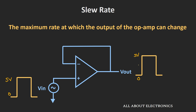Ideally, the output should go from 0 to 5V in no time. But actually, the output will take some time to reach from 0 to 5V. The actual waveform will look different, and the time taken by the op-amp to reach 5V depends upon the slew rate of the op-amp.